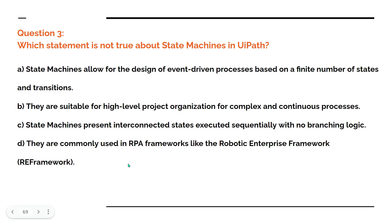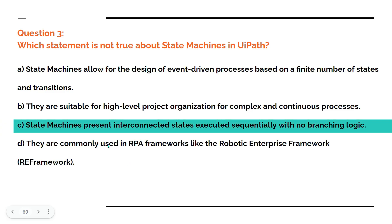The right answer is C — state machines present interconnected states executed sequentially with no branching logic — this is an incorrect statement. State machines do have branching logic, so saying they execute sequentially with no branching is wrong. The other statements are correct.